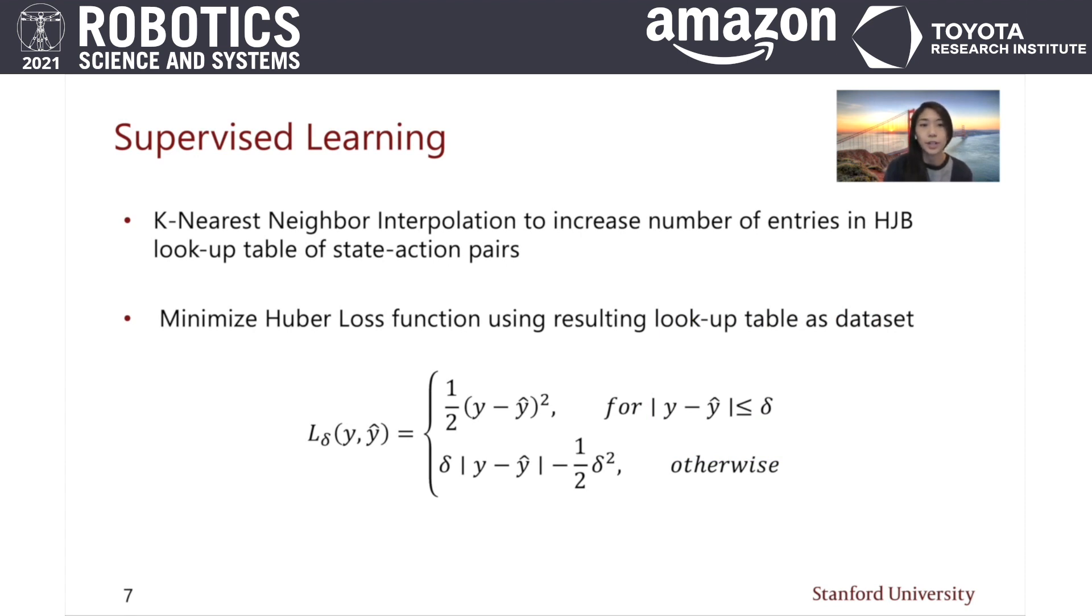More entries are added to the lookup table by applying a k-nearest neighbor interpolation, and these state-action pairs are then used as a data set to train a neural network. In our approach, we minimize a Huber loss function to train the neural network in a supervised fashion.